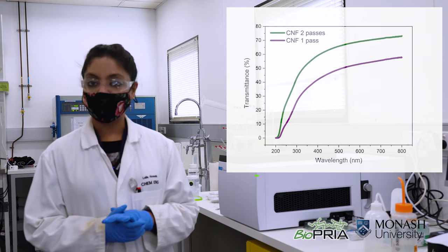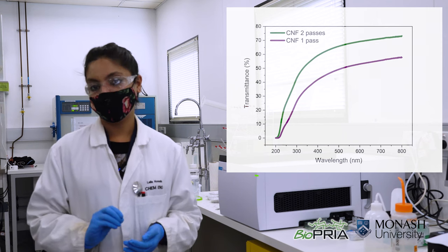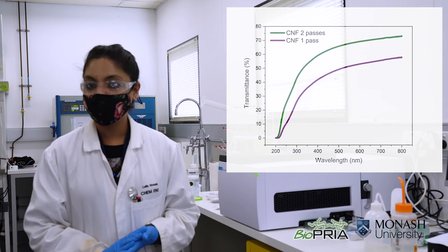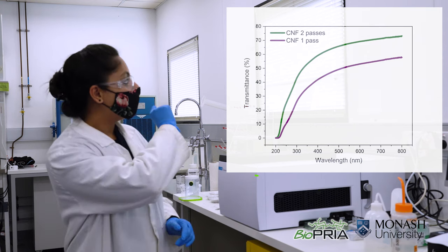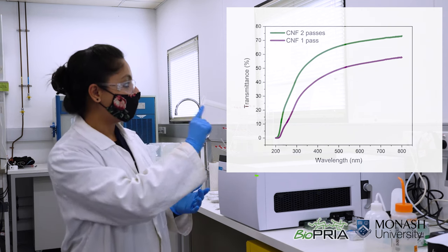As you can see in the graph the green line is indicating two pass nanocellulose gel and the purple line is indicating one pass nanocellulose gel. As you can see the green line is showing higher transmittance compared to the purple line.